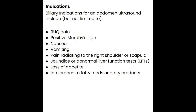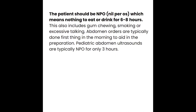Patients should be NPO — nil per os — for at least six to eight hours before the exam. They should also avoid chewing gum, smoking, or excessive talking, as these introduce air into the system. Children only need three hours NPO. Diabetic patients need to eat to keep blood sugars stable — always monitor them closely and they can usually take their medication with a small sip of water in the morning.